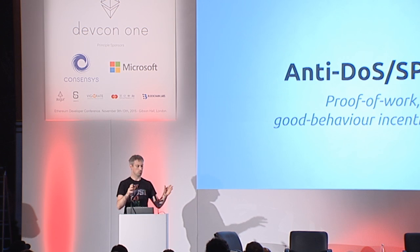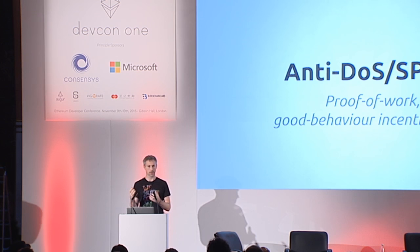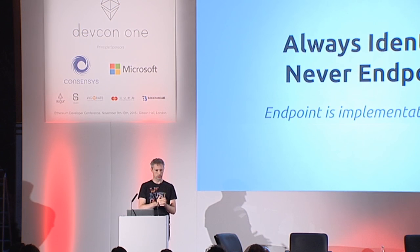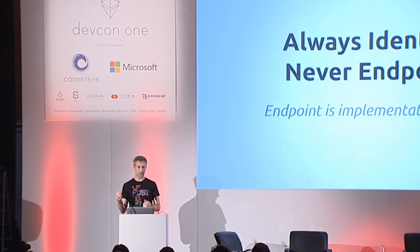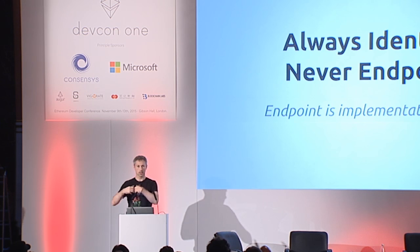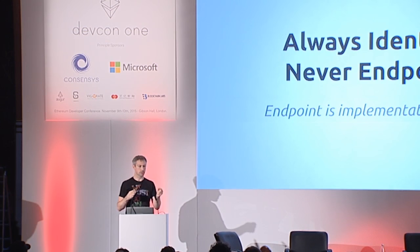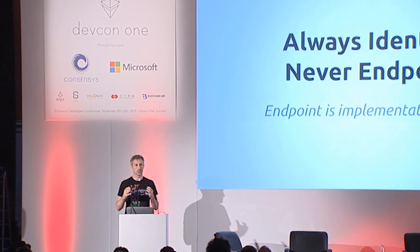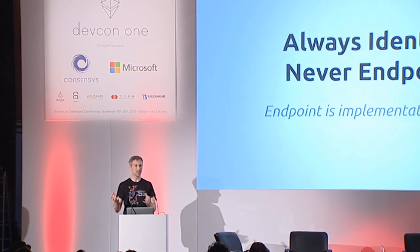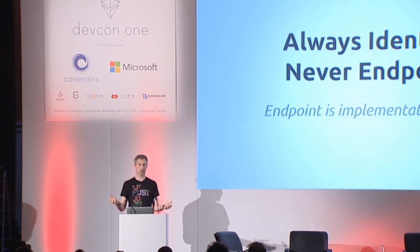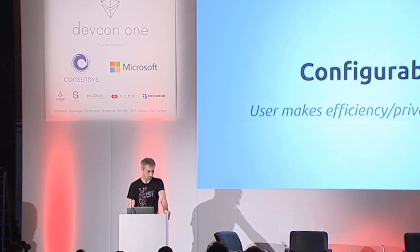It's also got a built-in anti-DOS system with good behavior incentivization. One of the important tenets Whisper is designed around is always considering identity and never considering endpoint. We consider endpoint to be an implementation detail to do with the hardware it's running on. In terms of Whisper, we never deal with endpoints. This is nice because messages can never be tied to any particular physical location — rather, they're tied to cryptographic identities.